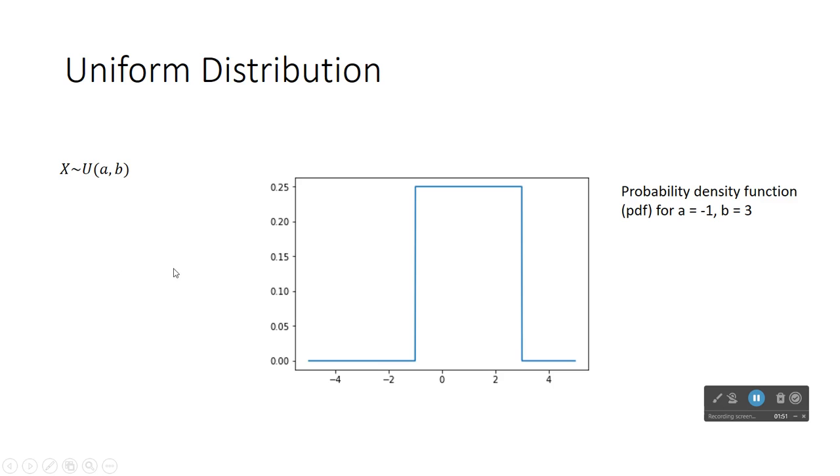The uniform distribution is represented by a graph on the real number line where the height of the line indicates in general what's called the probability density of particular outcomes occurring. And so uniform means it's the same throughout.